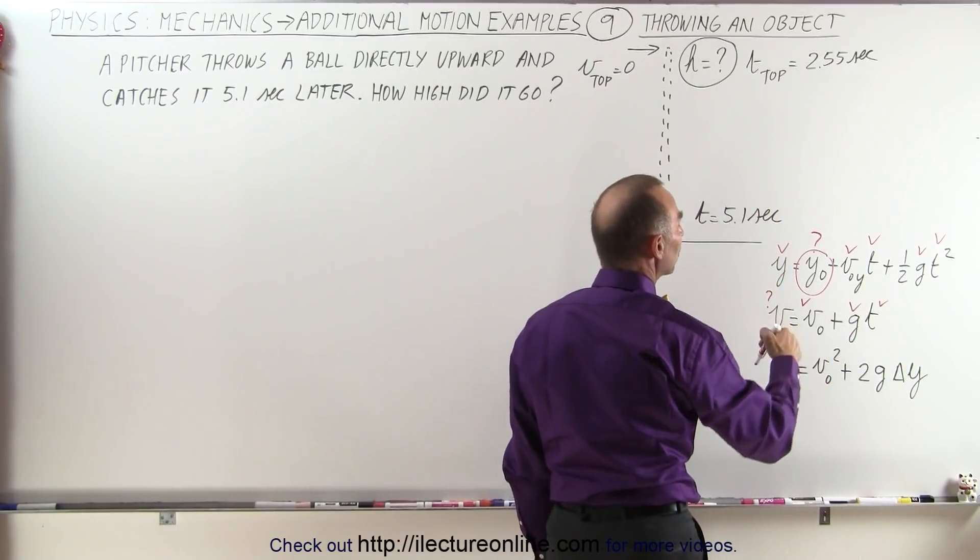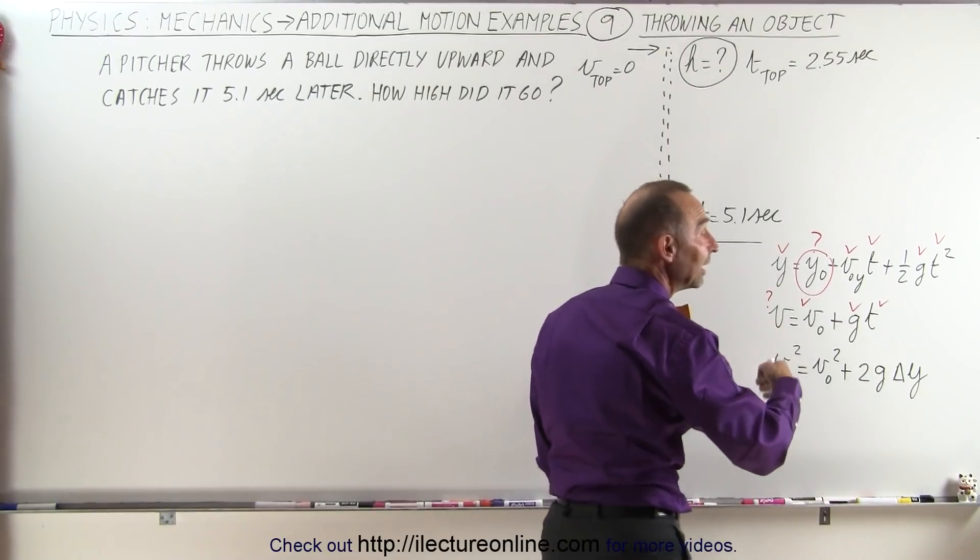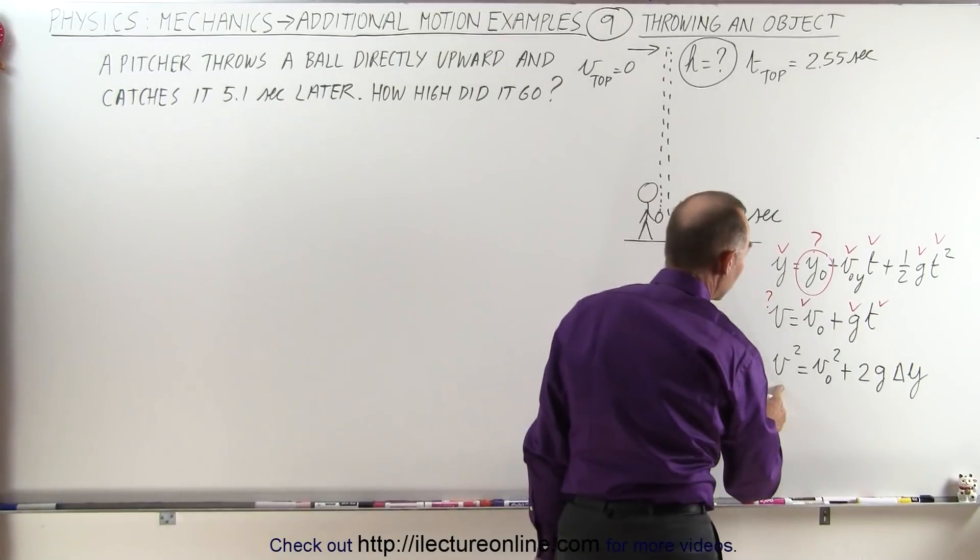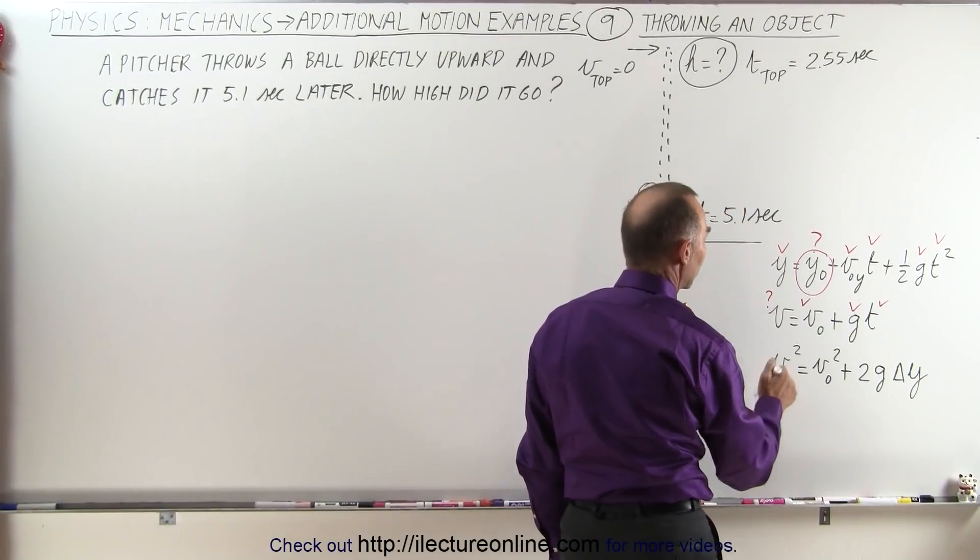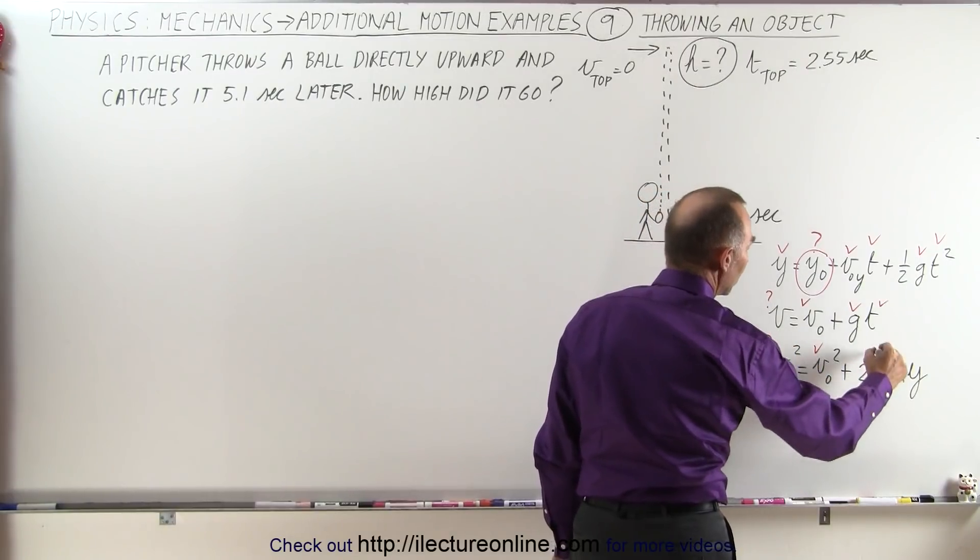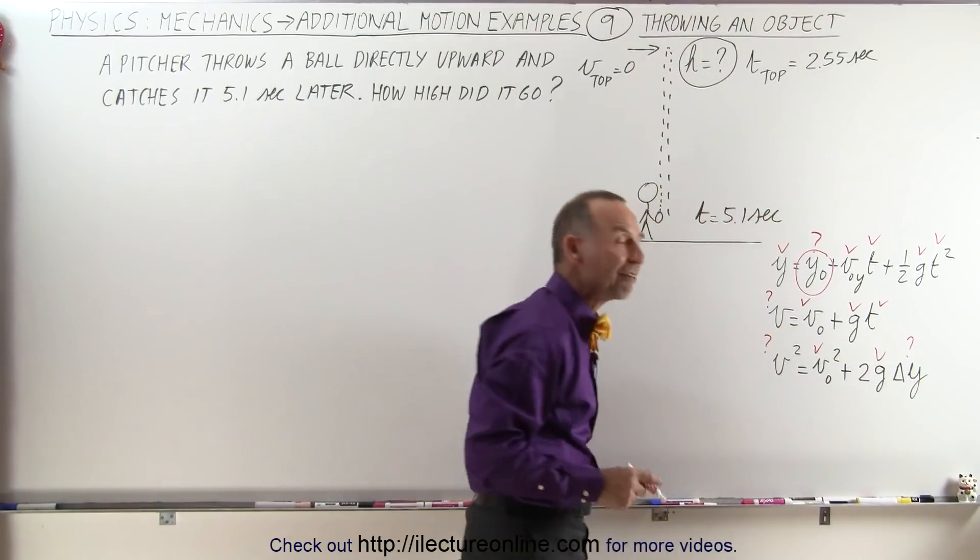So we can use this equation, but this equation will give us the velocity at the bottom, and then we'd still need another equation to solve for the height. The third equation here, the final velocity when we get to the bottom, we don't know that. The initial velocity we know that, g we know that, and delta y we don't know that, so the third equation we have two unknowns.